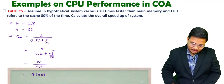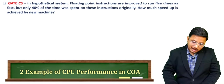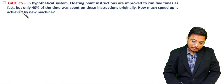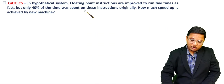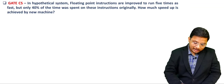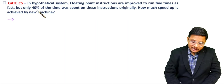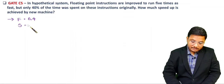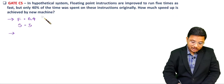Let us have a second question. In a hypothetical system, floating point instructions are improved to run 5 times as fast, but only 40% of time was spent on those instructions originally. So the enhanced fraction F = 0.4, and the speedup factor S = 5.